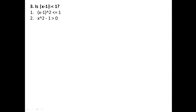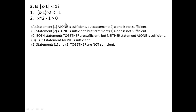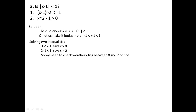Let us move to the third question: is |x - 1| < 1? Statement one: (x - 1)² ≤ 1. Statement two: x² - 1 > 0. Simplifying the question, removing the absolute value gives two inequalities: x - 1 < 1 and x - 1 > -1, which solve to x > 0 and x < 2. So we need to check whether x lies strictly between 0 and 2. Note that x cannot equal 0 or 2.